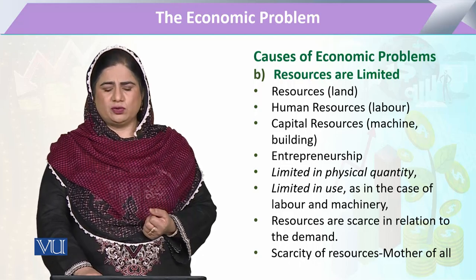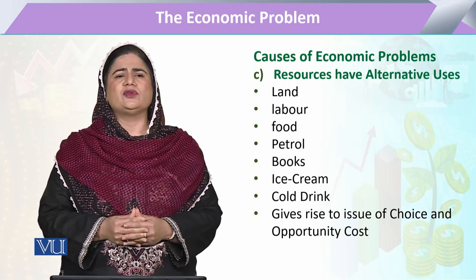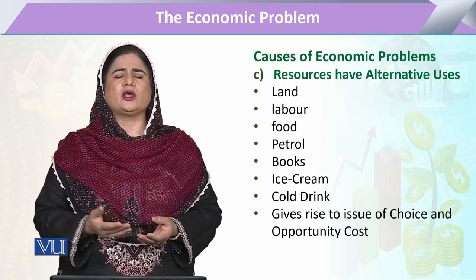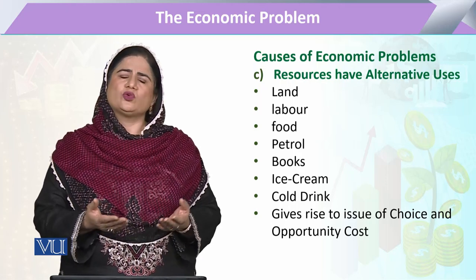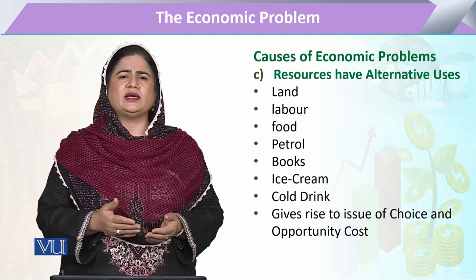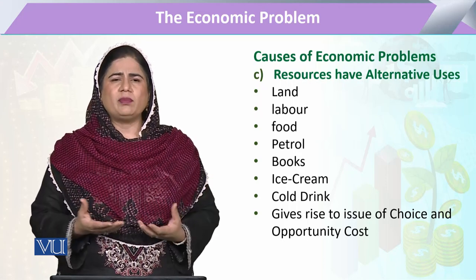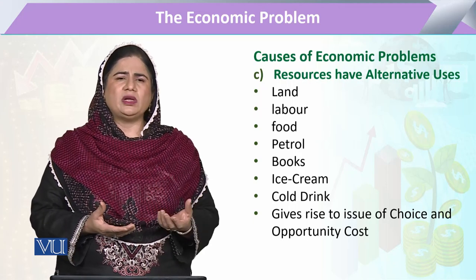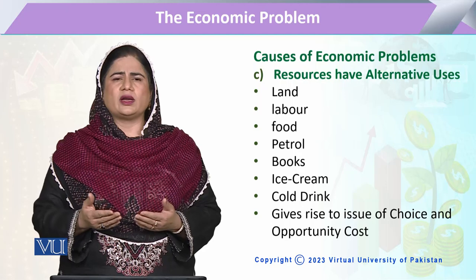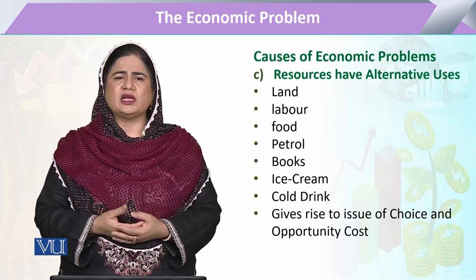The third cause is that resources have alternative uses. Alternative uses means that a single resource can be used in different ways — it depends on the user how they utilize it. For example, a building can be used to open a school or a cinema; a field can be used to grow one crop or another. Similarly, money can be used for one purpose or another — for the betterment of society or for the attainment of personal wishes.